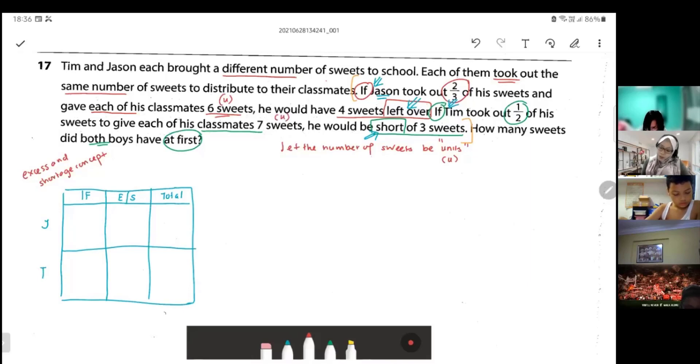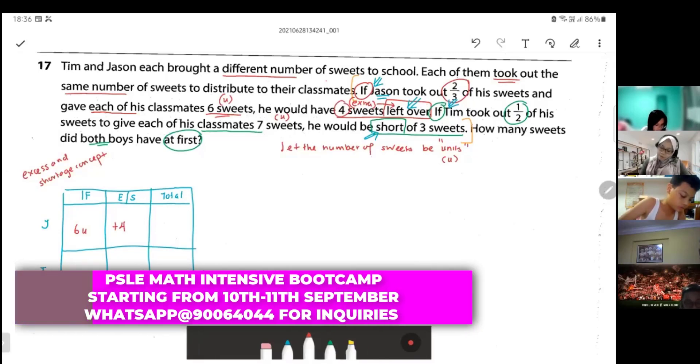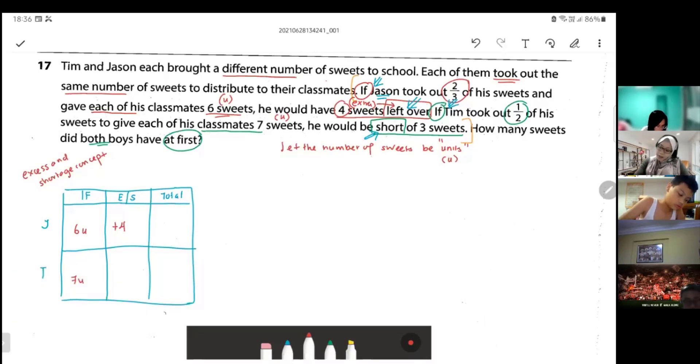Jason took out six units of sweets and then he have left over means extra. This one means extra. The word left over, extra means last. How many extra? Four. Tim, seven units. He will be short. Short means not enough. Shortage means it's a minus. Minus how many? Three sweets, not enough.